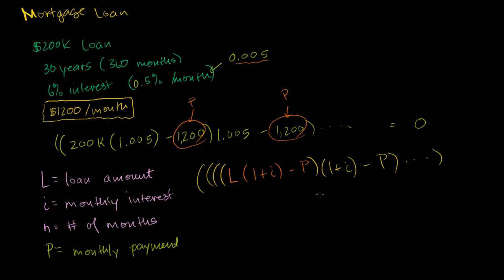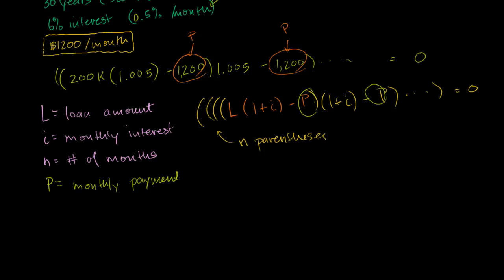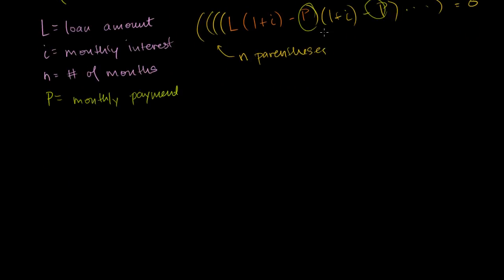After you've done this N times, the result is all equal to 0. So the question I'm setting up in this video is: how do we solve for P? If we know the loan amount, the monthly interest rate, and the number of months, how do you solve for P? It doesn't look like an easy algebraic equation to solve. Let's see if we can make some headway by looking at specific cases of N.